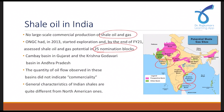However, it was found that the quantity present at these sites was not commercially viable. A major reason for this is that the shale gas and oil found in India have different characteristics compared to North American ones.